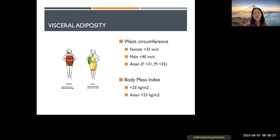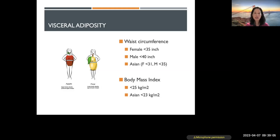The most common reason we see insulin resistance is visceral adiposity — fat in the abdomen. We measure this with waist circumference: greater than 35 inches for females and greater than 40 inches for men is considered too large. For Asians, we see a lot of cardiometabolic problems at much lower waist circumferences — less than 31 inches for females and less than 35 for men. BMI cutoffs are 25 for Europeans and 23 for Asians, because we see more cardiometabolic disease at a lower BMI for Asians.